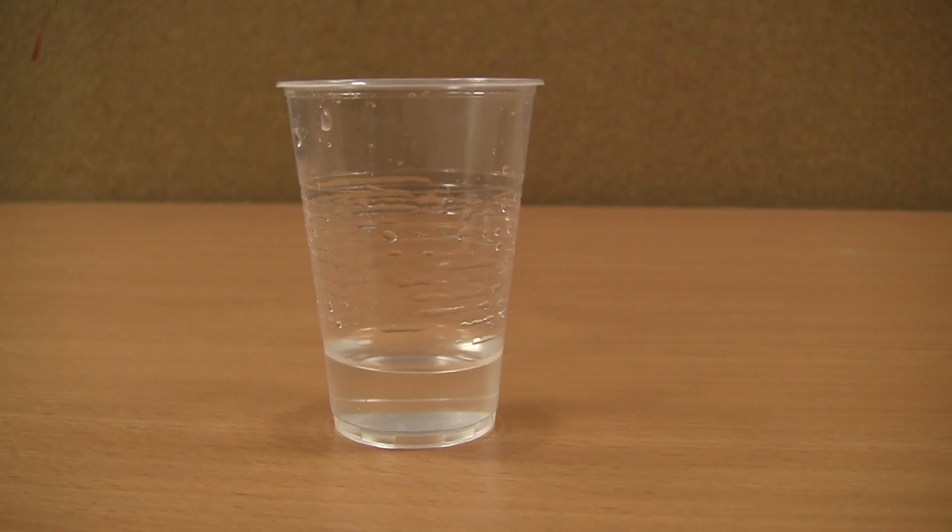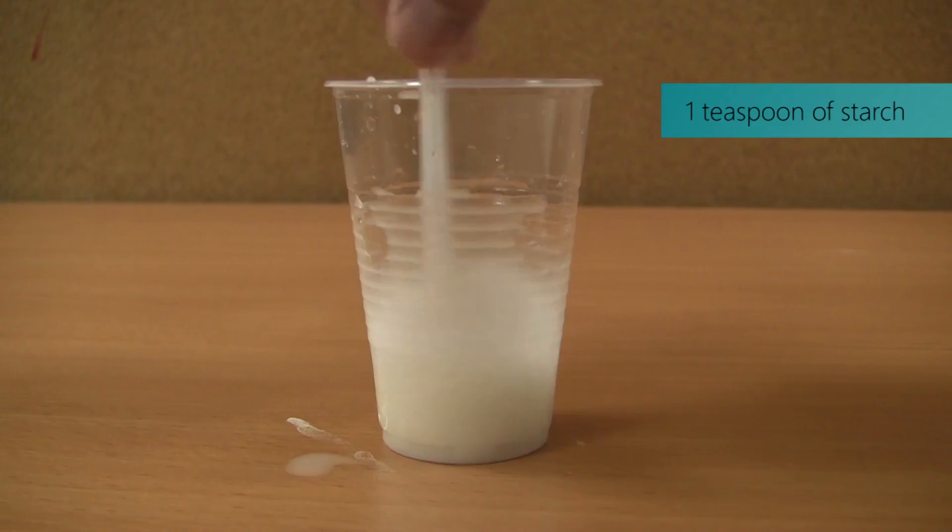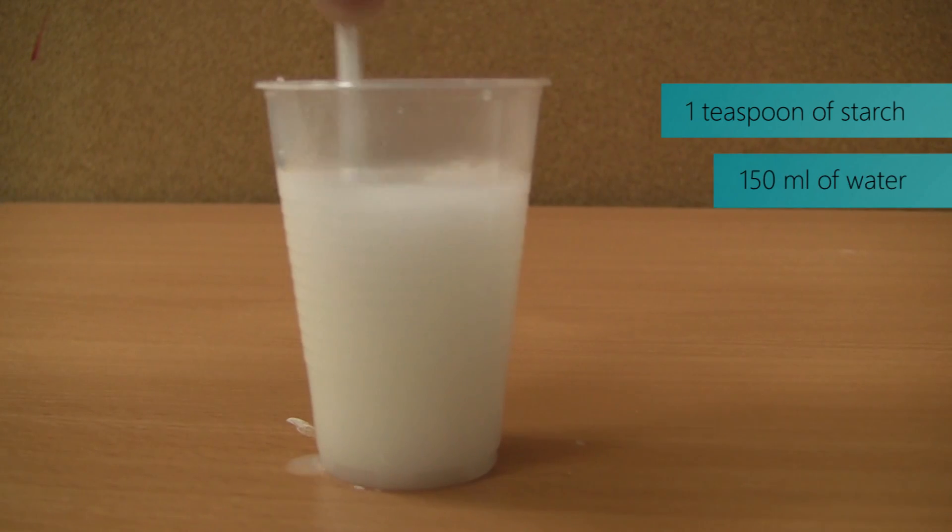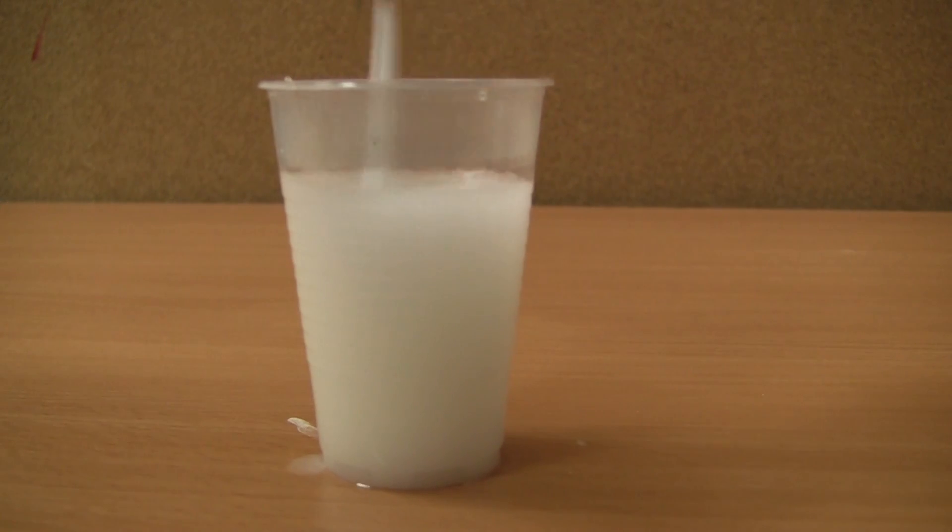Next prepare the liquid starch. Mix 1 teaspoon of starch in a little cold water. Then add hot water and stir again. The total amount should be 150 ml.